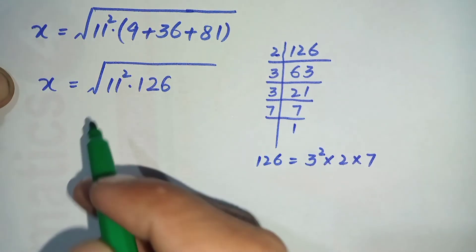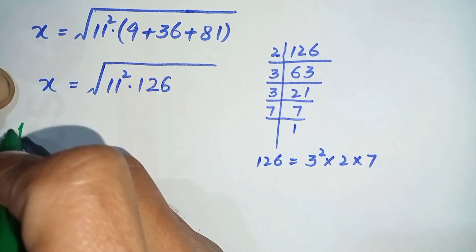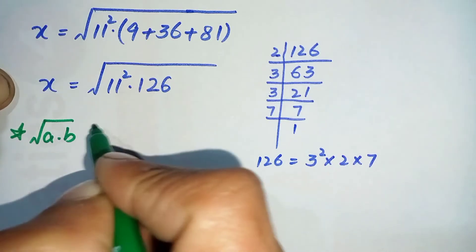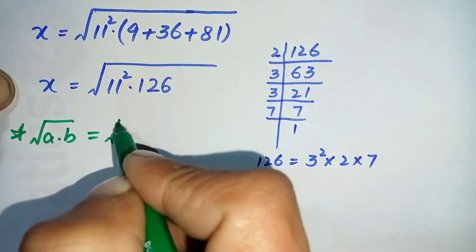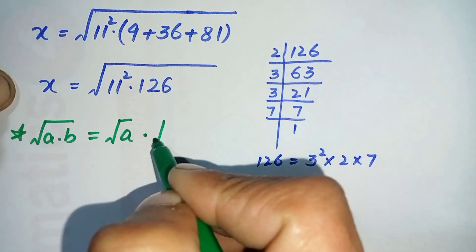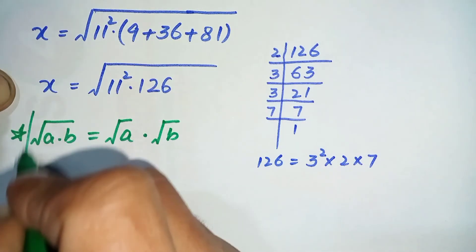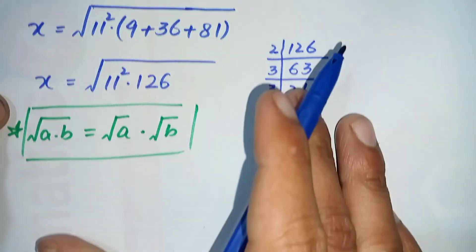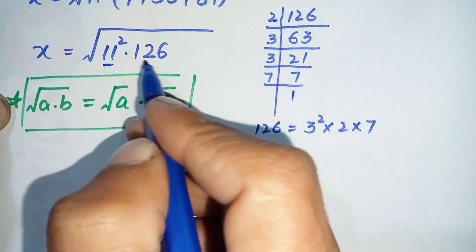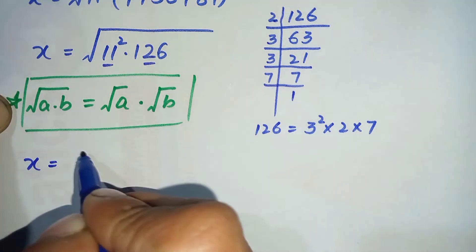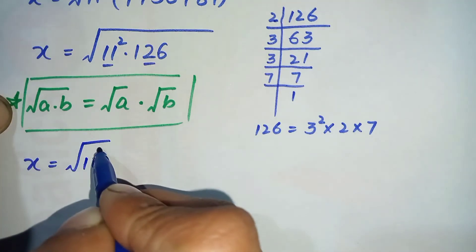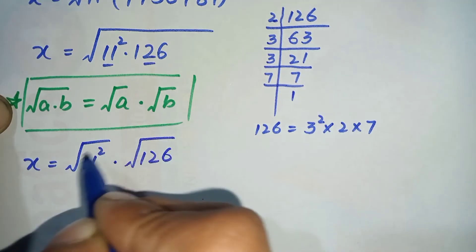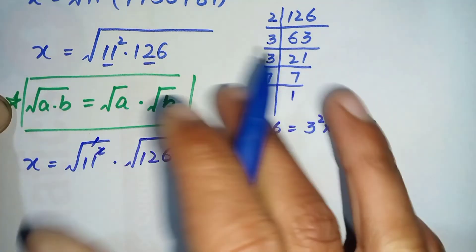We will use the square root property that the square root of a times b can also be written as the square root of a times the square root of b. Applying this property, the equation becomes x is equal to the square root of 11 squared times the square root of 126.